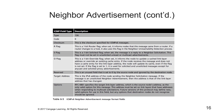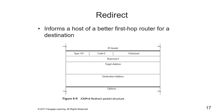Routers send redirect messages to inform a host of a better first hop router for a destination. Routers also send redirect messages to inform a host that a destination node is on-link, which usually occurs because prefixes are different between the sending host and the destination node. Here is an example of a redirect packet structure and the redirect message format fields.